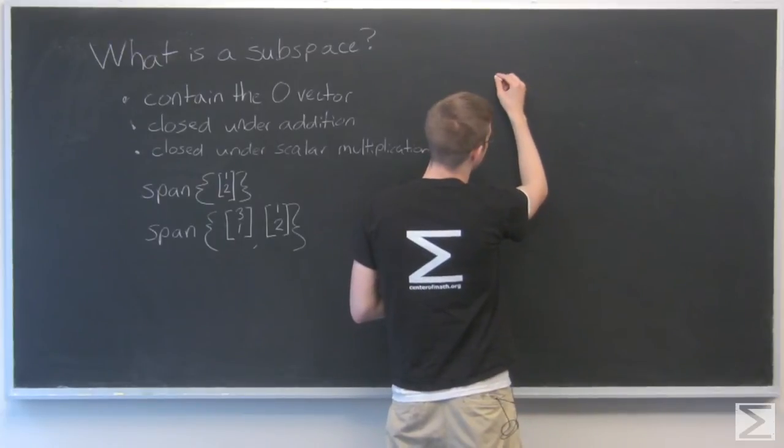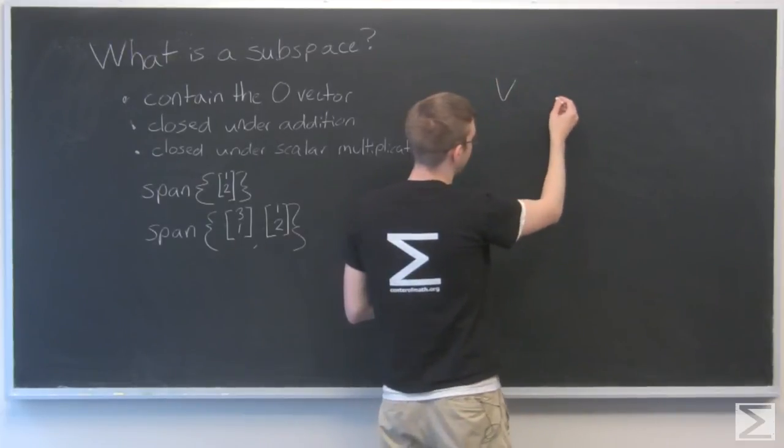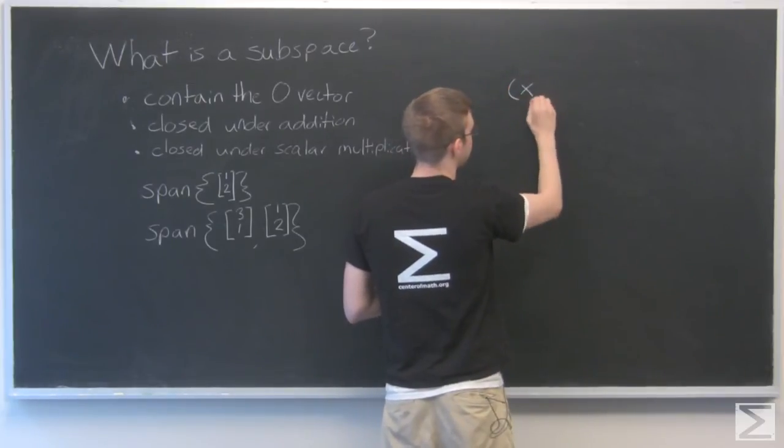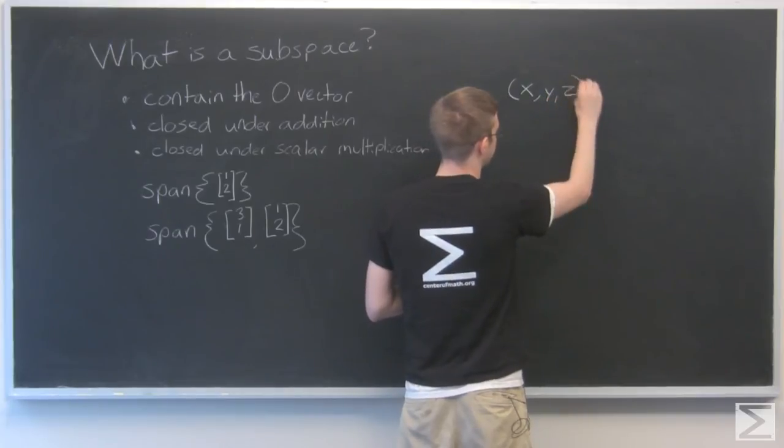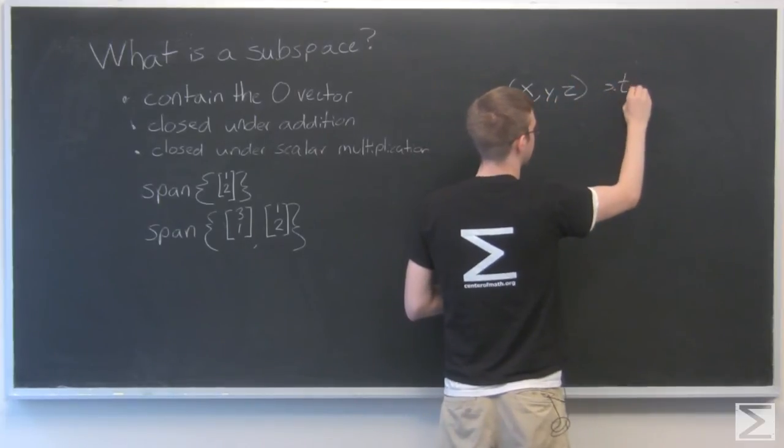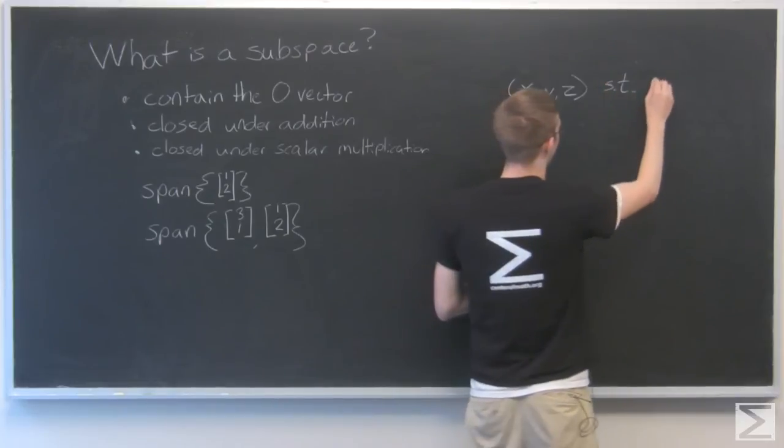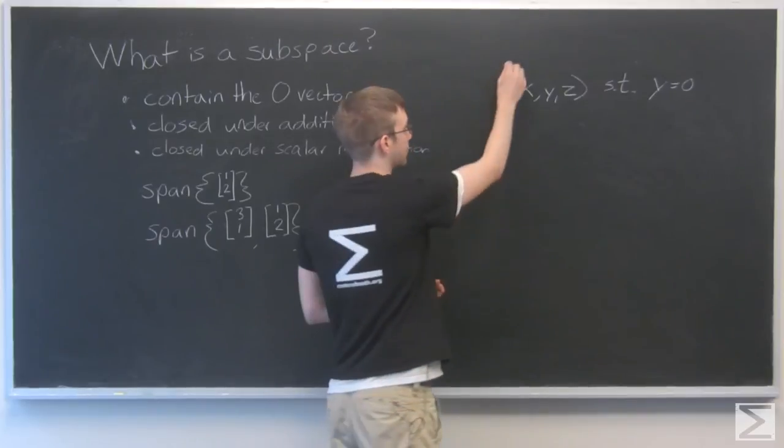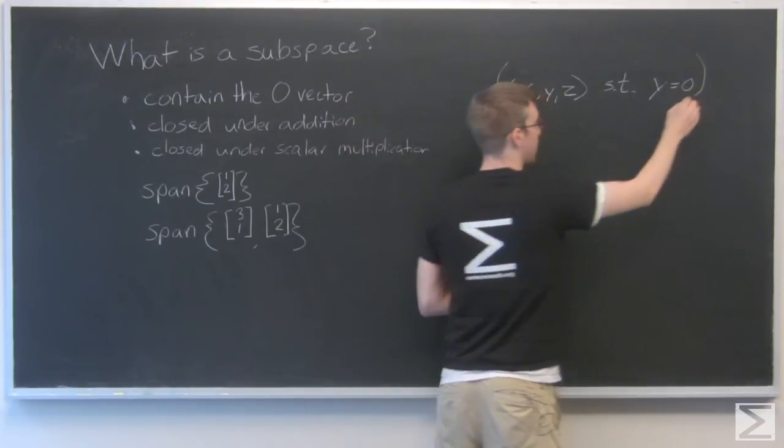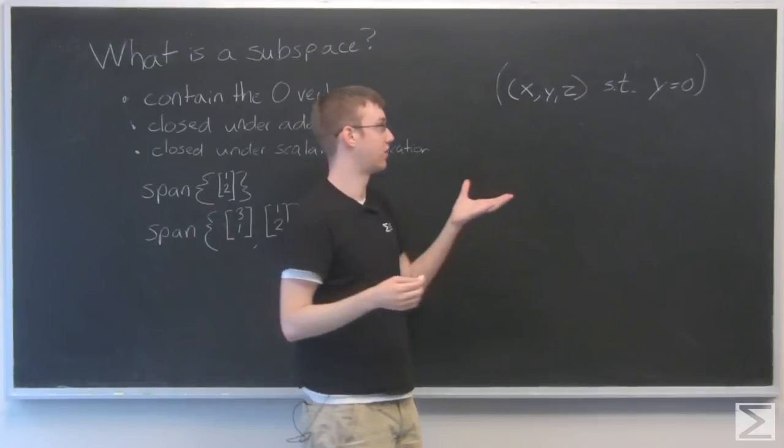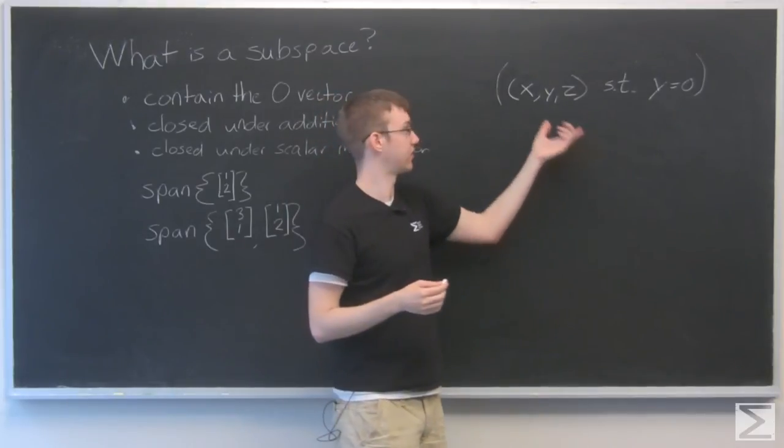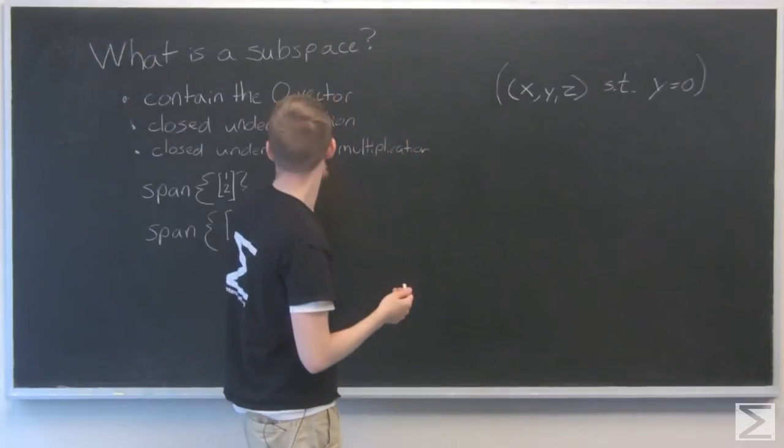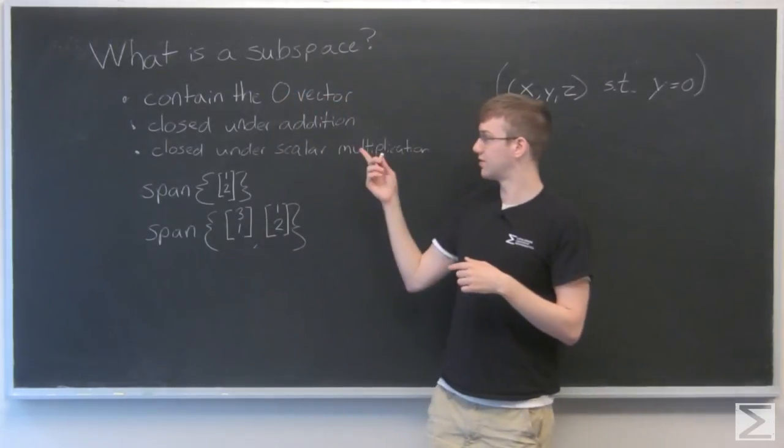My subspace, v, is all the vectors, so all the vectors x, y, z, such that y is equal to 0. So that's my subspace. Now, again, this is a set of vectors, just all the vectors that fulfill this requirement. And I want to see if that is okay with these three rules.